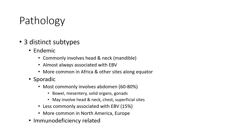There are three distinguished subtypes. Endemic: commonly involves the head and neck and jaw. Almost always associated with Epstein-Barr virus. More common in Africa and other areas along the equator. Sporadic: most commonly involves the abdomen in 60 to 90% of cases. More common in North America and Europe.